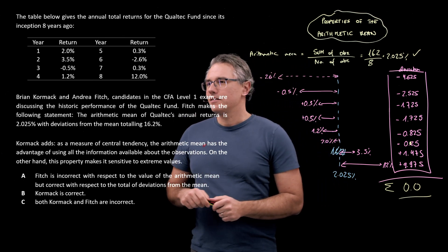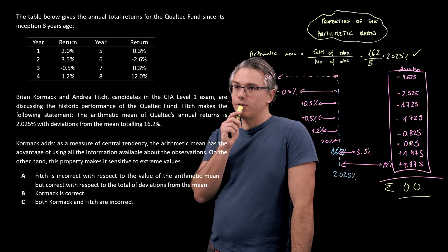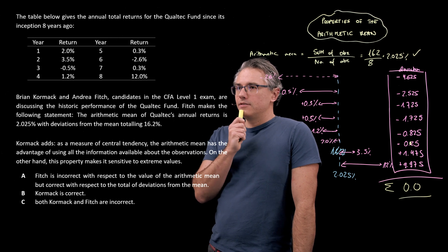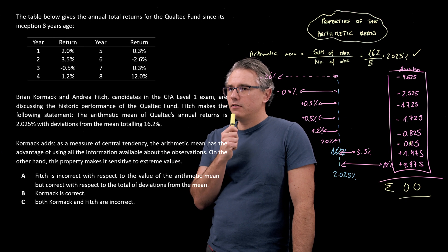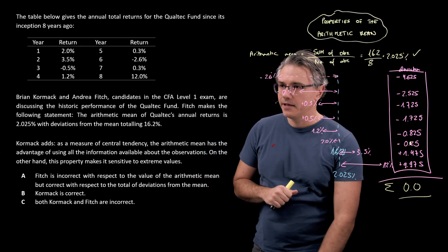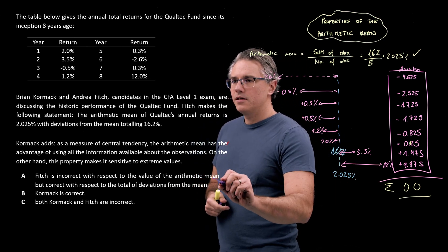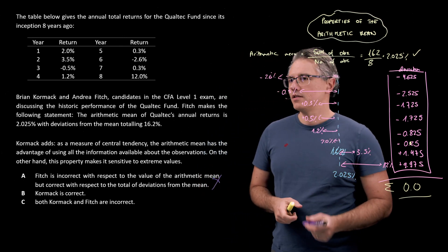So I can see that Fitch is incorrect, but only in respect, or with respect to the deviations. Let's have a look at answer A. Fitch is incorrect with respect to the value of the arithmetic mean, but correct with respect to the total of deviations from the mean. Well, this one is not right. It's a wrong statement.